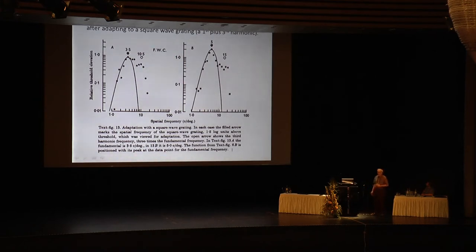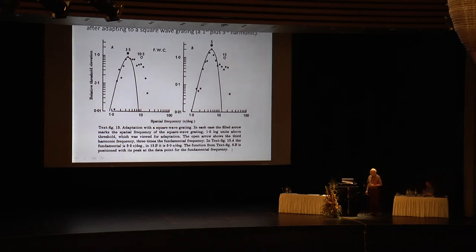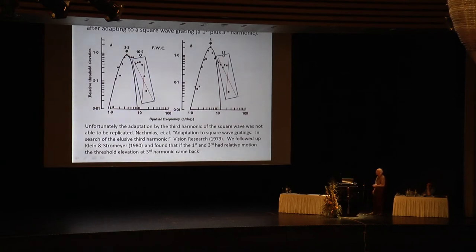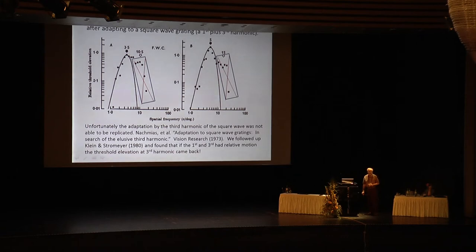The flaw is that Fergus was his own subject, and he used a method of adjustments — they just changed the knob until they couldn't see it. When people started replicating it, the first ones were Nachmias in 1973, who was unable to replicate it. They then started taking this thing from audition — something called signal detection theory, 2-AFC, doing blanks, always measuring blanks.